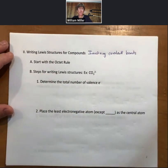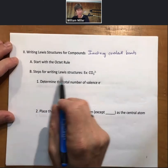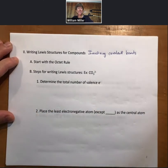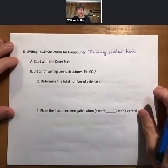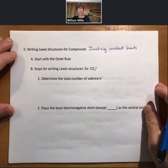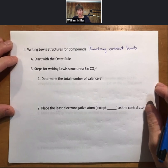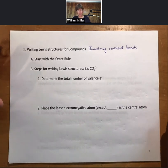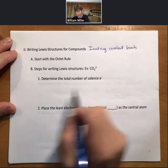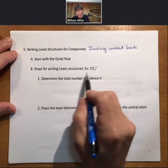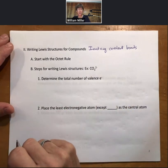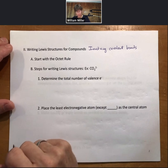Start with the octet rule—that means we want them to have eight electrons each. Then steps for writing Lewis structures. These are my steps, so there are other ways of doing this. As long as you get the right answer, there are many ways. I'm going to count up the total number of valence electrons. That's step one. I'm going to do that for the example of the carbonate ion. That's what we're going to be doing the Lewis structure for.